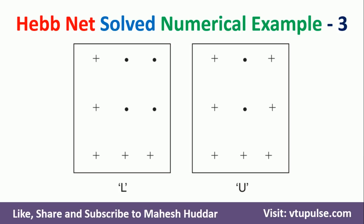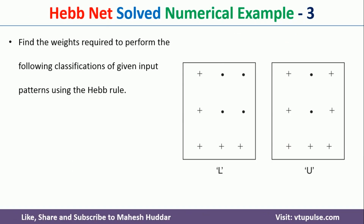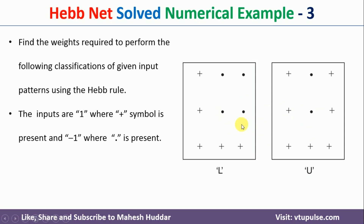This is the data set given to us. It contains two patterns: the first pattern is L and the second pattern is U. We need to use the Hebb rule and design the Hebb network so that it can classify these two patterns properly.